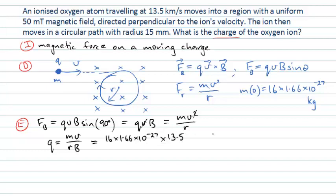So we'll convert that to meters per second. And then this is divided by the radius of the circular motion, which the question said was 15 millimeters. So again, we might convert that to meters, 10 to the minus 3 is a millimeter. And multiplied by the magnetic field which is 50 millitesla. So again, 50 by 10 to the minus 3.